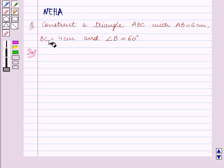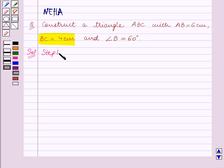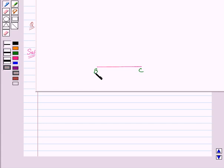We are given that BC is equal to 4 cm, so first we will construct BC. Step 1 of construction is draw a line segment BC which is equal to 4 cm. So we have drawn a line segment BC of length 4 cm.